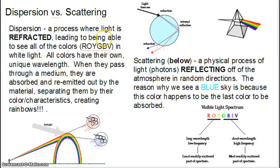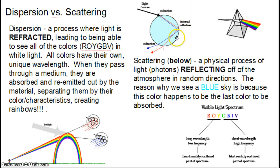This leads to being able to see all the colors in white light. All colors have their own unique wavelengths, and this is important — when they pass through a medium, such as water droplets, they're absorbed and re-emitted out of the material. It separates them by their colors and characteristics, and this is how it creates rainbows. The water droplet is acting just like a prism, and therefore they both separate white light into the characteristic colors of Roy G. Biv.